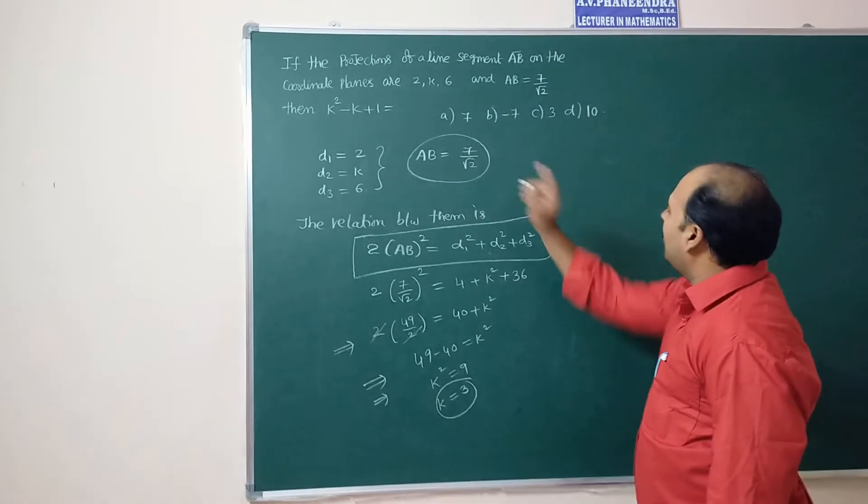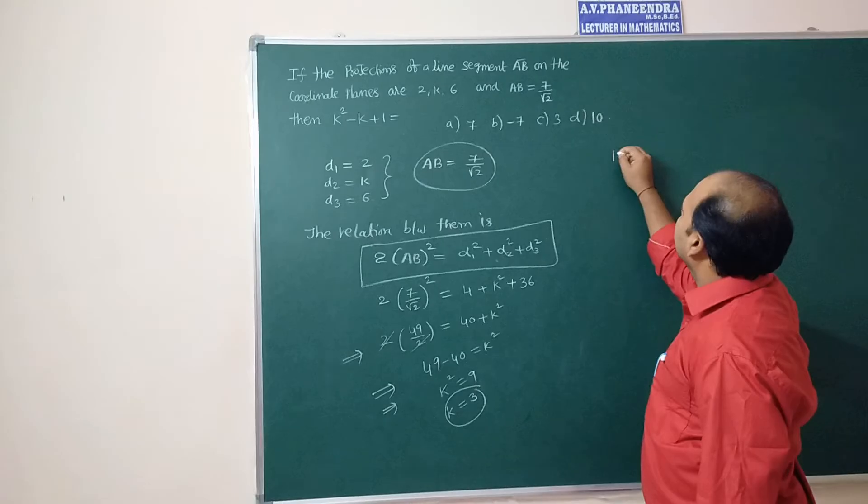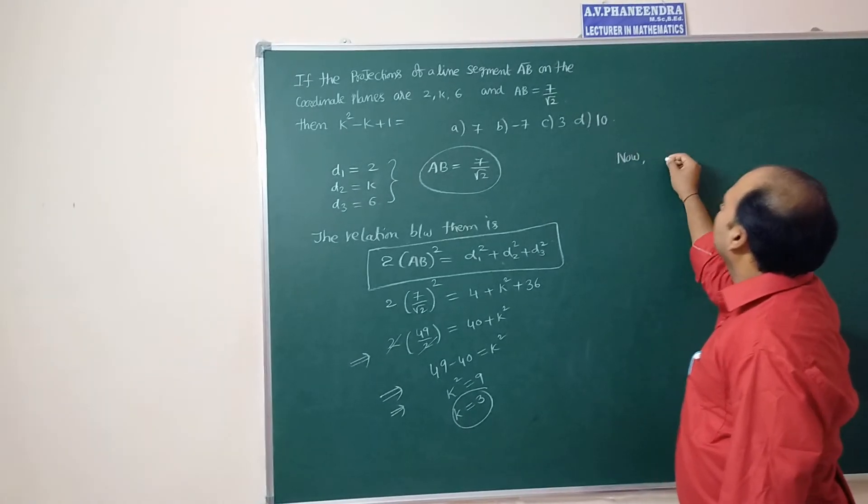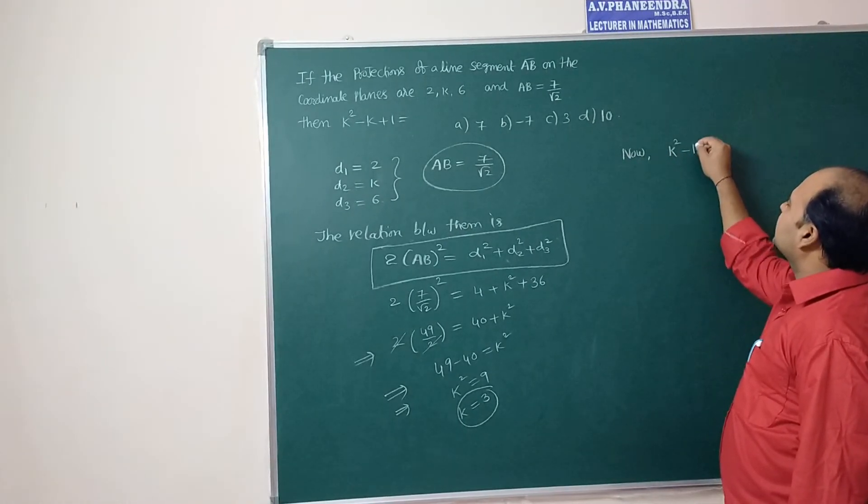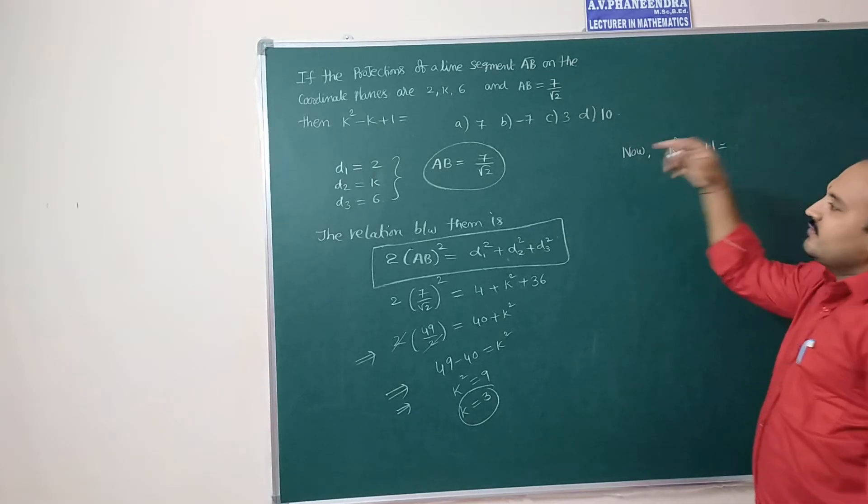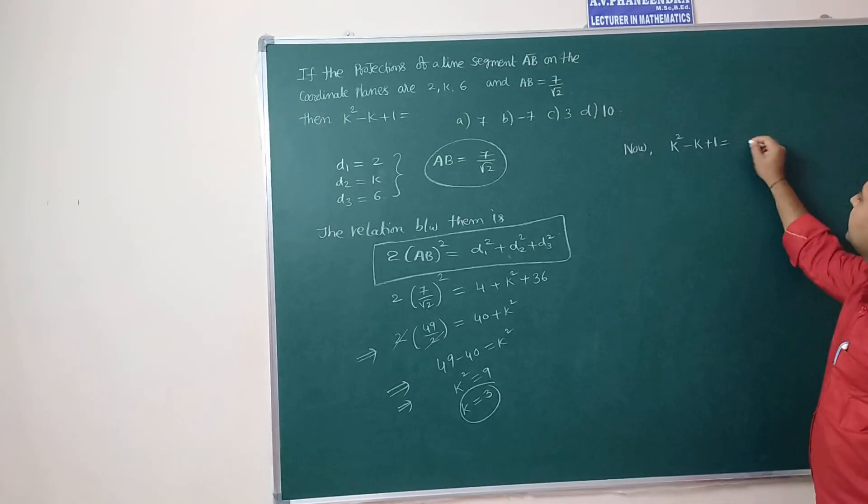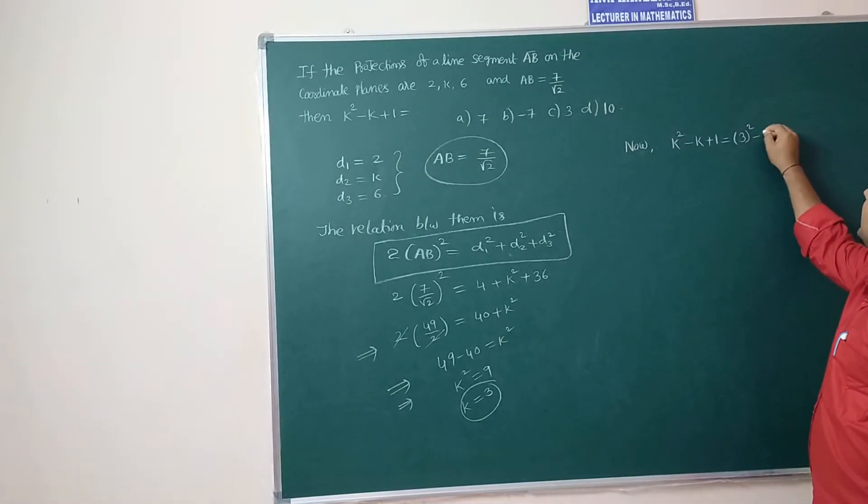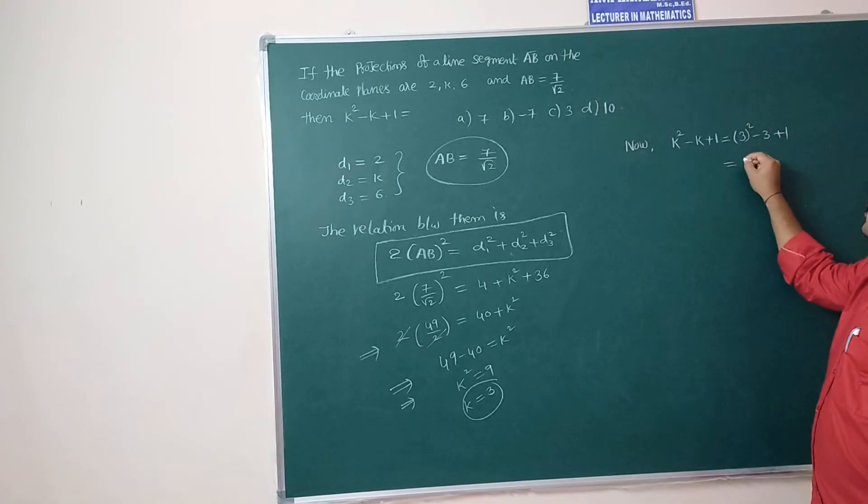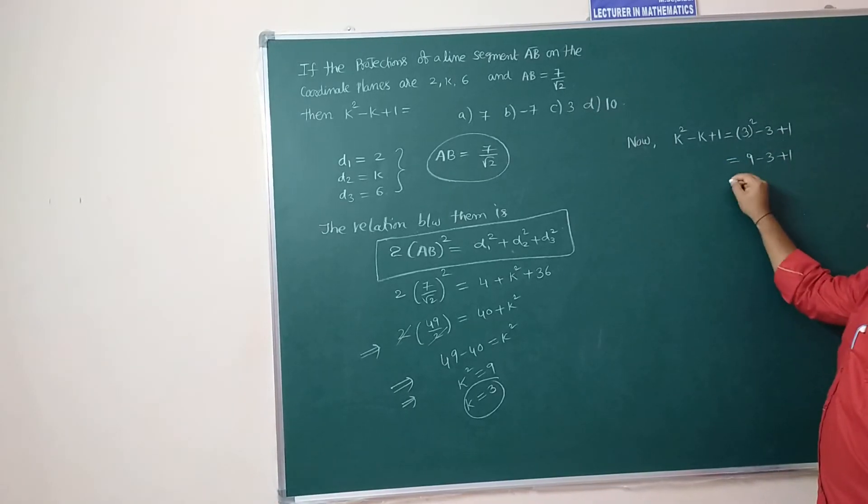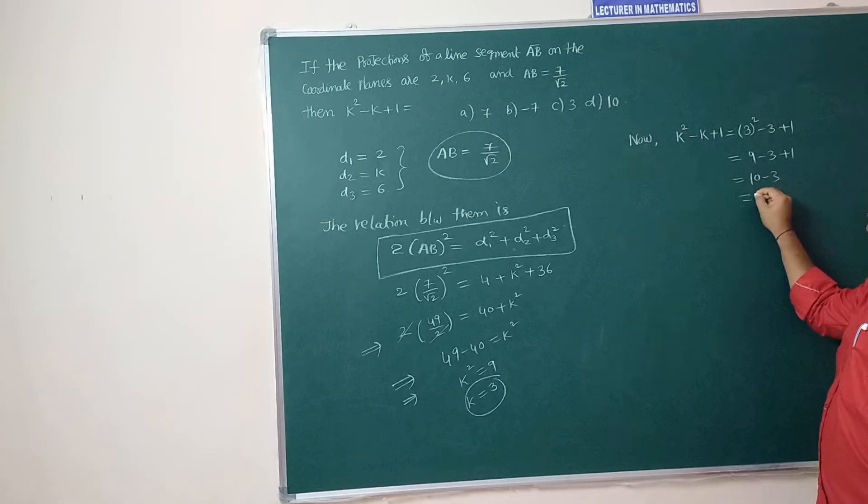So k is equal to 3. After that now consider k square minus k plus 1. This value they are asking to calculate. K square means 3 square minus 3 plus 1, 9 minus 3 plus 1, that equals 10 minus 3 which is equal to 7.